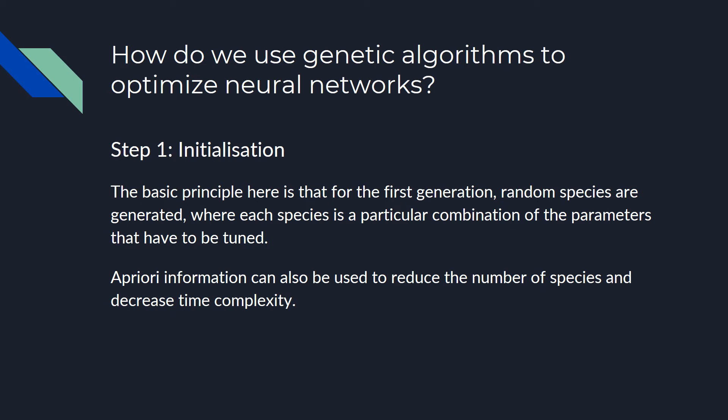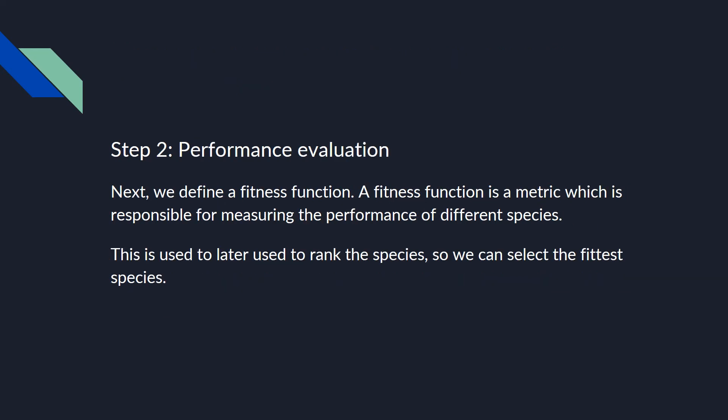The first step for genetic algorithms to optimize neural networks is initialization — that's the first generation. Since we have no prior data, we generate random species, where each species is a combination of the parameters to be optimized. In certain cases, a priori information can be used to reduce the number of species, which further decreases the time. The next step is performance evaluation, done by designing a fitness function — a function which decides on a metric responsible for measuring the performance of different species, used to rank them from strongest to weakest.